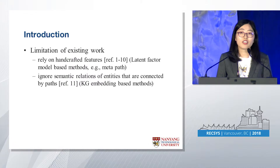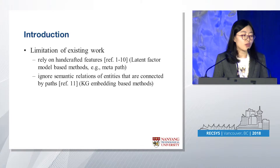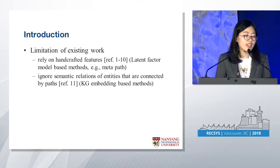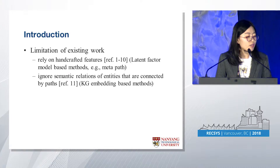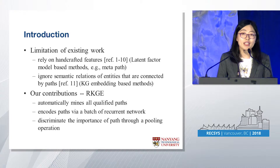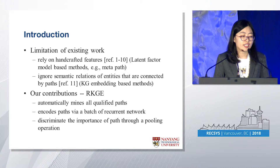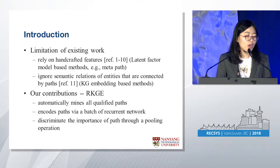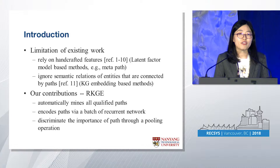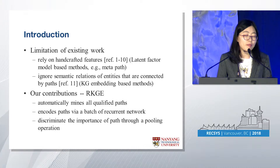Although there are many existing works that leverage knowledge graphs for recommendation, they suffer from several limitations. Some rely on handcrafted features — they predefine some meta-paths and extract them from the knowledge graph, then merge meta-path-based similarity into, for example, a matrix factorization model. Other works, the knowledge graph embedding-based methods, ignore the semantic relations of entities connected by a path and only consider directly linked nodes. Therefore, to address those issues, we propose a recurrent neural network embedding-based method that automatically mines all qualified paths containing different semantics, encodes all paths through a batch of recurrent networks, and discriminates the importance of paths through a pooling layer.